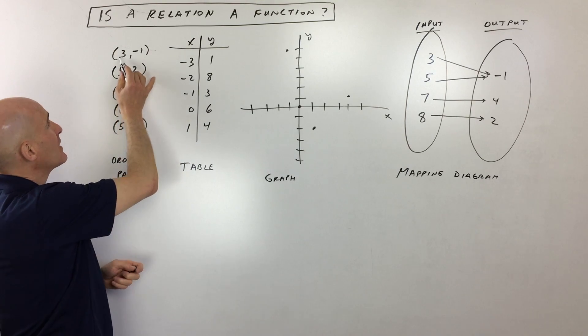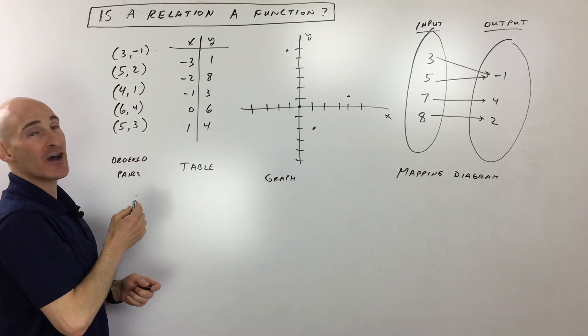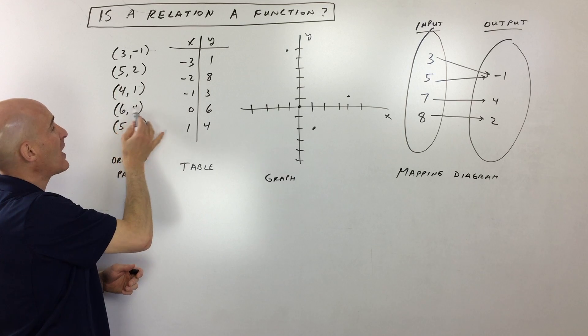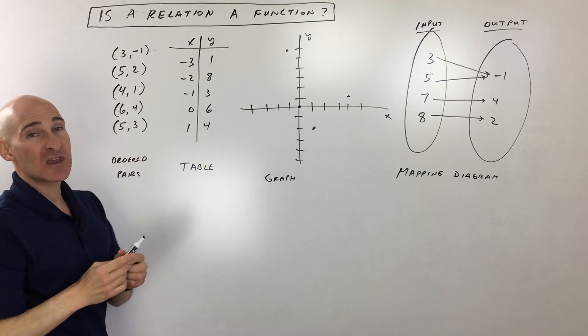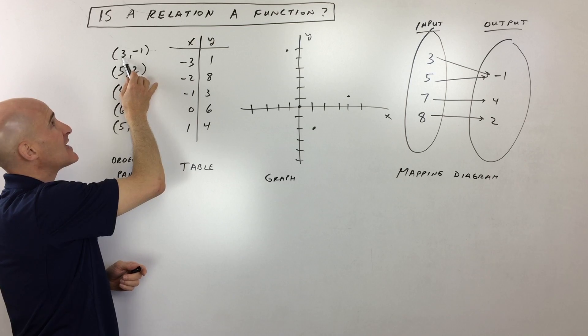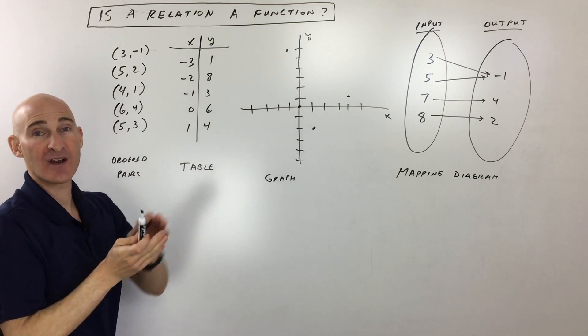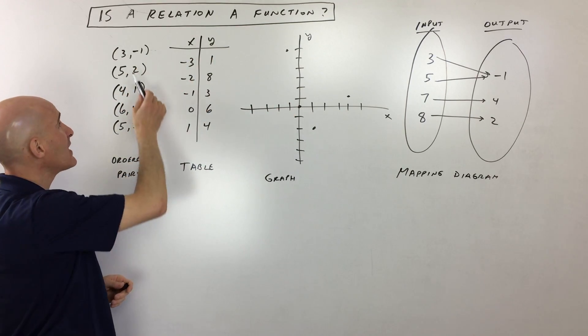So with the ordered pair, you can see that we're pairing the X value with the Y value, X with Y, X with Y, and so on. But what we want to be careful of is you don't want to have the same input going to two different outputs like that.